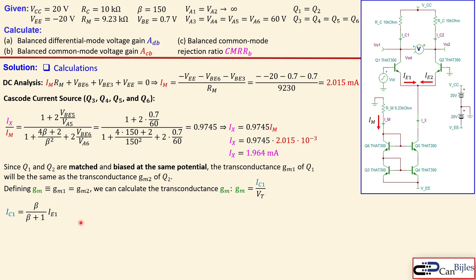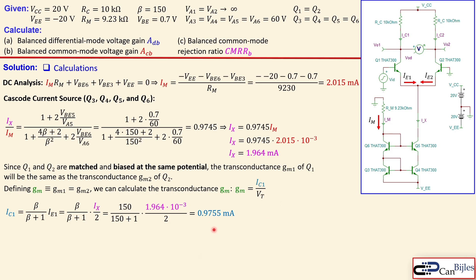Because the circuit is symmetric, Ix of 1.964 milliamps splits into equal parts, but IE1 is not exactly equal to IC1 due to the base current. We apply the ratio beta over beta plus one. Since IE1 equals Ix over 2, the full expression gives us 150 over 151 times Ix over 2, yielding IC1 equal to 0.9755 milliamps. Substituting into the transconductance formula gives gm equal to 0.0375 siemens.